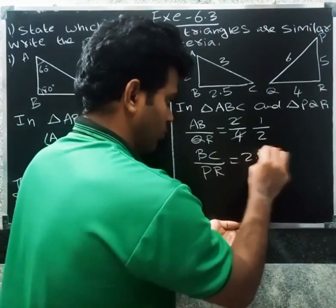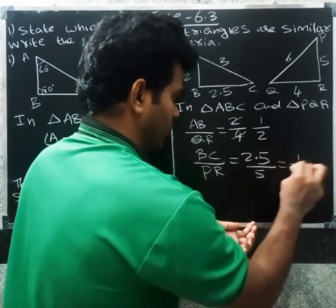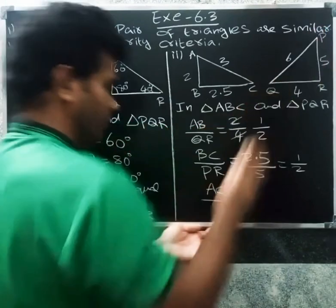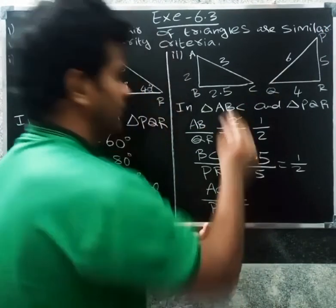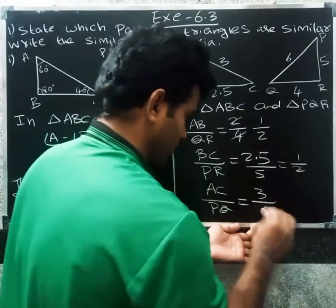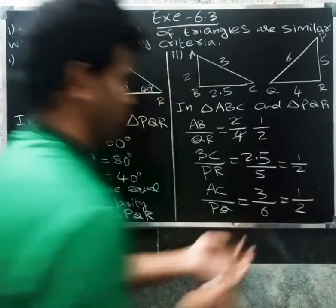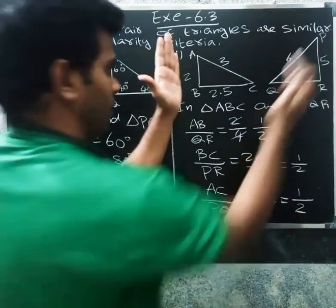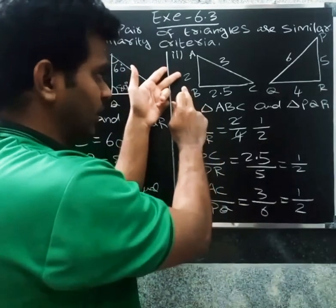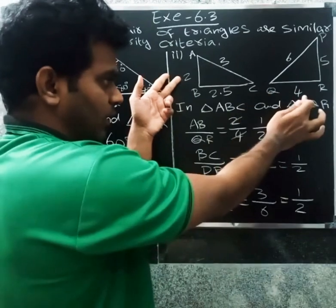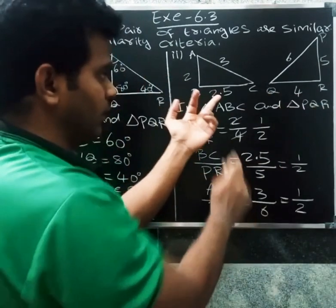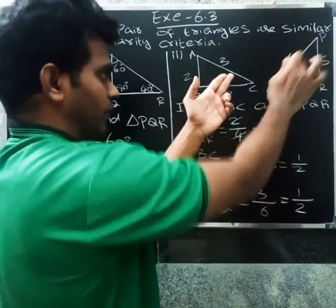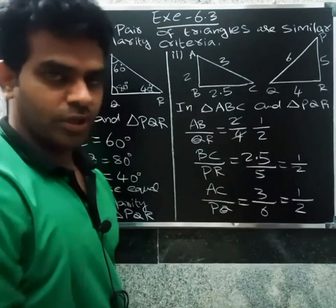AB by QR equals 2.5 by 5, cancel to 1 by 2. Next, BC by PR: PQ value is 3, PQ value 6, so 3 by 6. AB by QR equals 1 by 2, BC by PR equals 1 by 2, AC by PQ equals 1 by 2. The ratio is equal — the sides are in proportion.